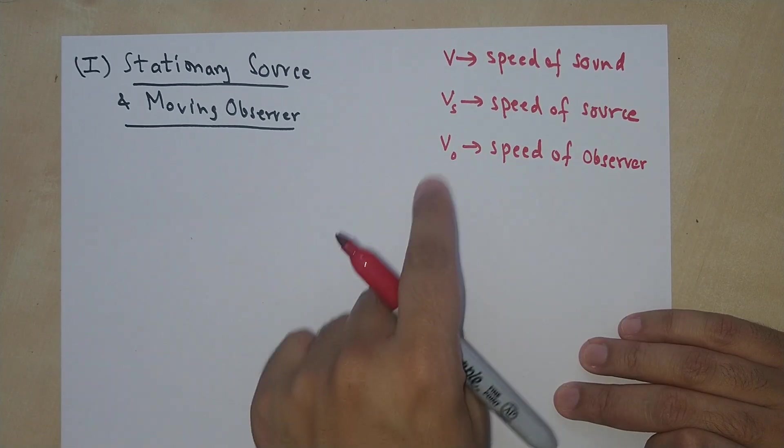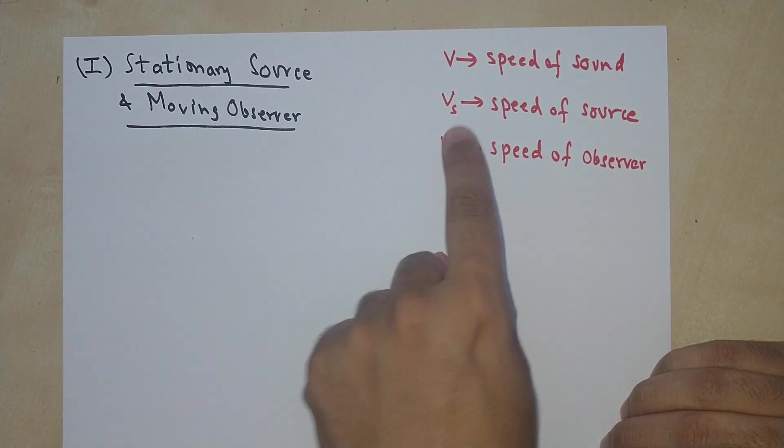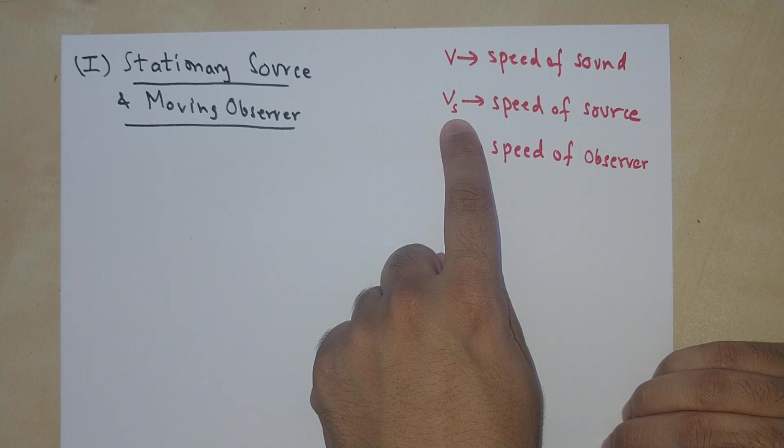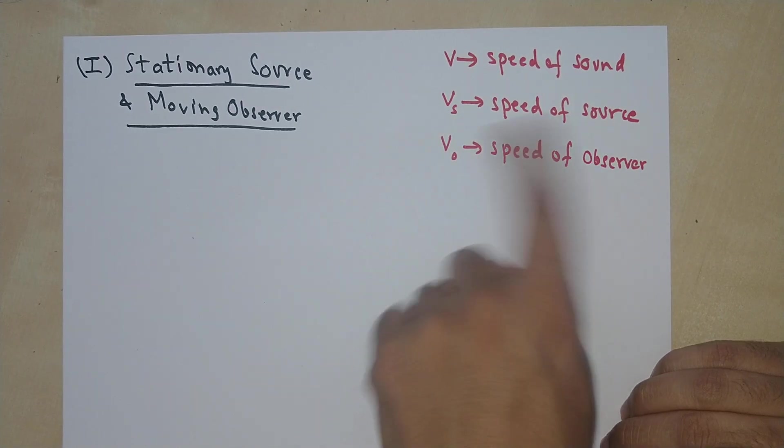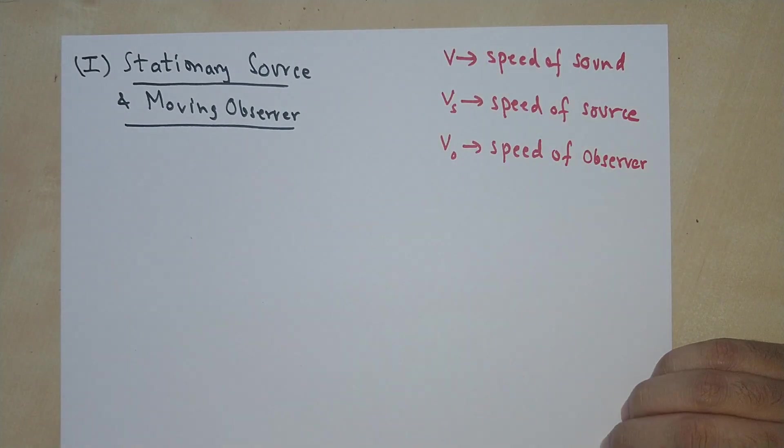And V sub o is going to be the speed of the observer. Remember this notation because V sub s can be a bit confusing. V sub s is the speed of source. Whenever you see a V without any subscript, that's the speed of sound.